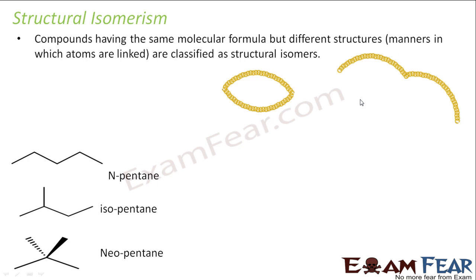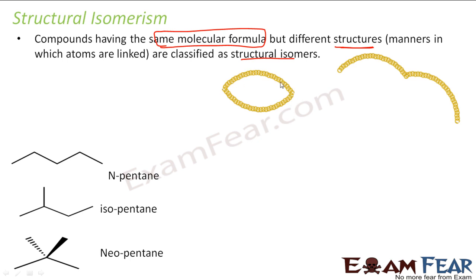So what is structural isomerism? Compounds have the same molecular formula but different structures — that means the manner in which they are linked — and they are called structural isomers. For example, consider the same length of gold chain: one is linked as a bracelet, one as a necklace, and one as an open chain. In both cases, the structure is different but they have the same mass of gold and the same pattern of small gold rings.